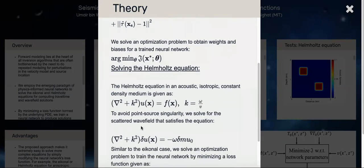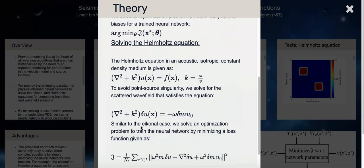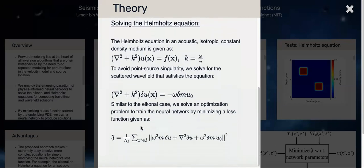Similarly for the Helmholtz equation, we use the Lippmann-Schwinger form of the equation. Instead of solving for the wave field solution, we're solving for the scattered wave field. Therefore we have a background wave field that we compute analytically, and on top of that we compute the scattered wave field using the physics-informed neural network. In a similar way, we form the loss function from the residual of this scattered wave field based equation.